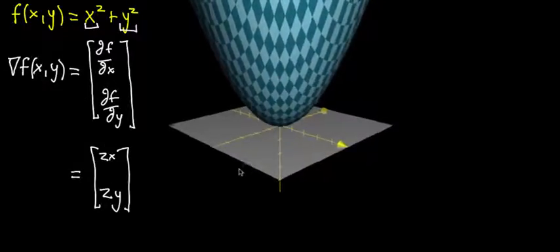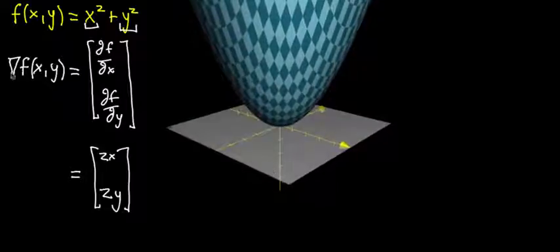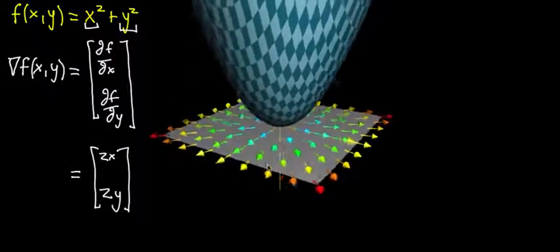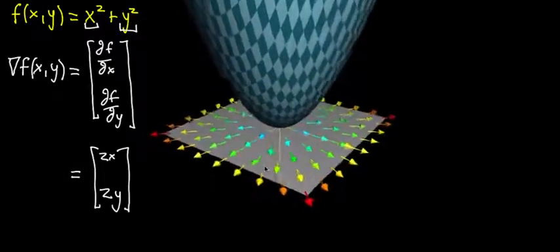All right, have you done it? Have you thought about what it's going to look like? Here's what we get. It's a bunch of vectors pointing away from the origin.